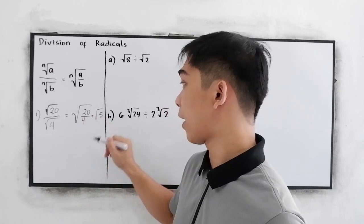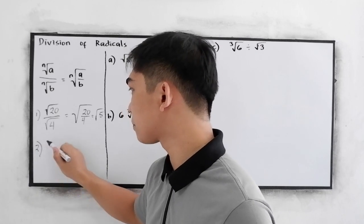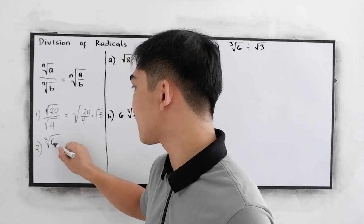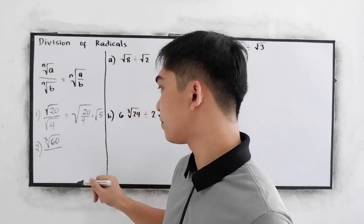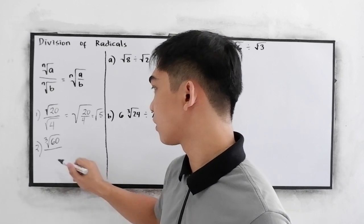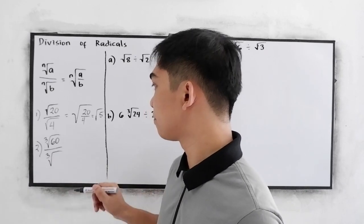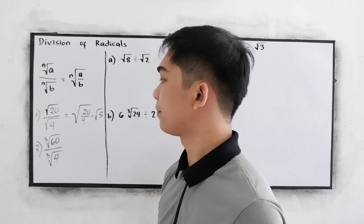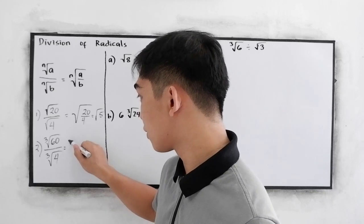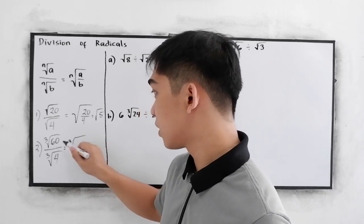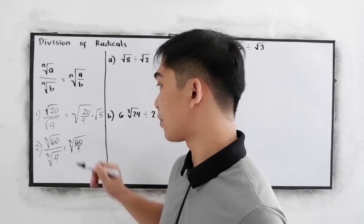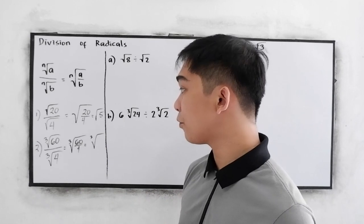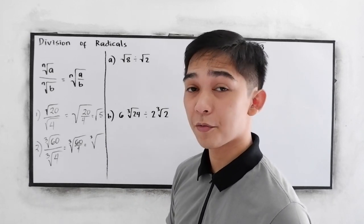If we have number 2, cube root of 80 over cube root of 4, we have cube root of 80 divided by 4. 80 divided by 4, that is 20.